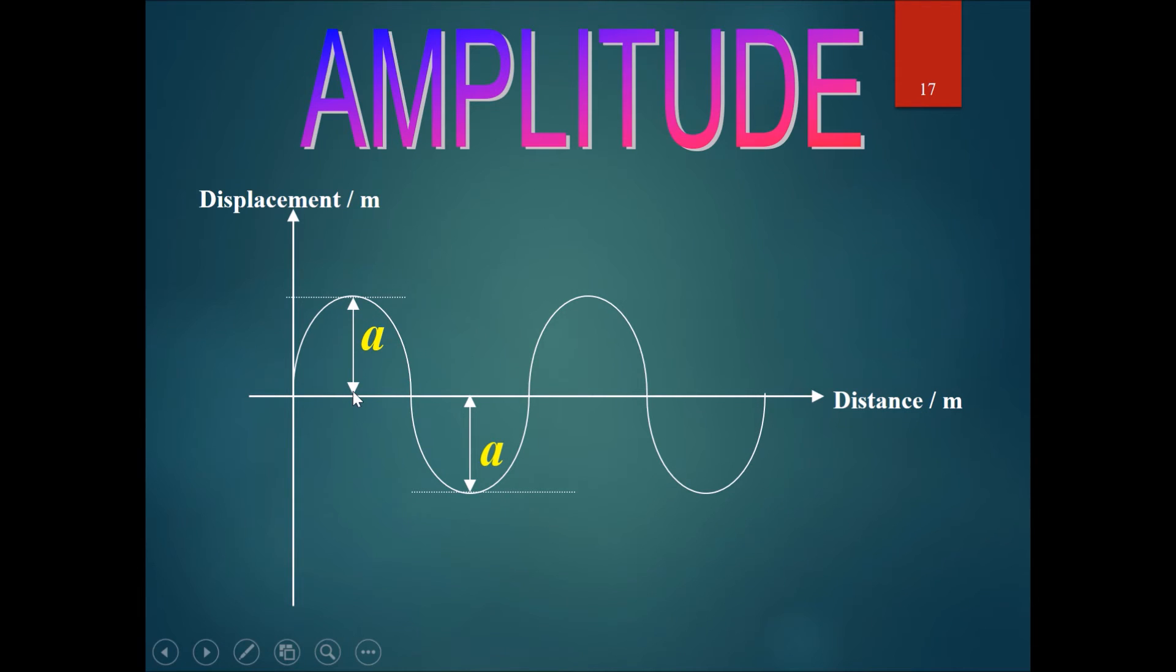They are the distance from the midpoint, the middle line, to the top, or the middle line to the bottom. Each of these are called the amplitude. One common mistake is that many people like to say the amplitude is from the top all the way to the bottom. This would be incorrect. That would instead be two times the true amplitude.